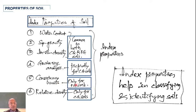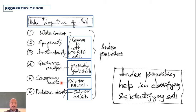The next index property is consistency limits, which is studied specifically for fine-grained soils. Consistency means how soil behaves in the presence of water. When you take soil and gradually add water, it starts dry, then becomes a nice plastic material, and then with more water becomes almost like muddy water. Consistency limits tell us how the soil behaves at different water contents, and this study is most beneficial for fine-grained soils.